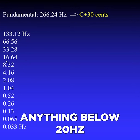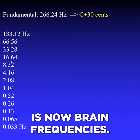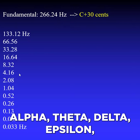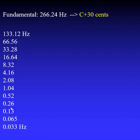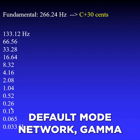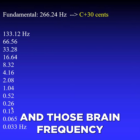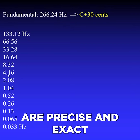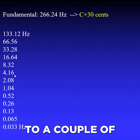If we divide these out, anything below 20 hertz is now brain frequencies — so we've got beta, alpha, theta, delta, epsilon, default mode network, gamma. Those brain frequency states of consciousness are precise and exact to a couple of decimal points.